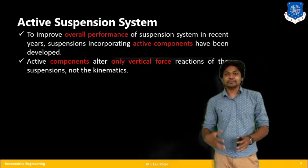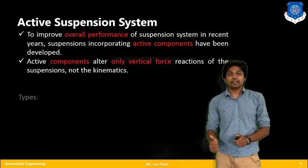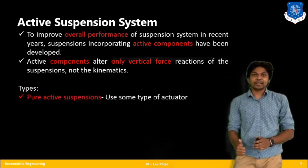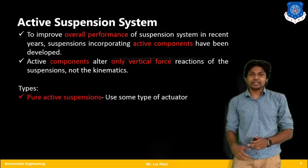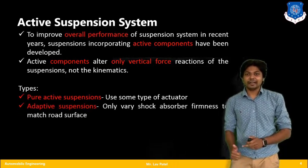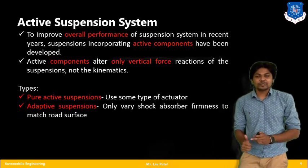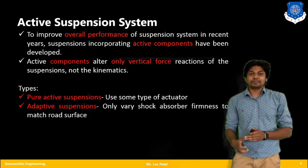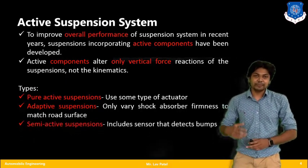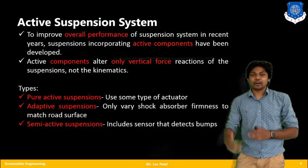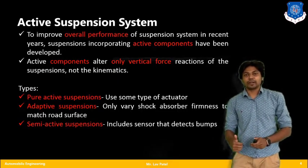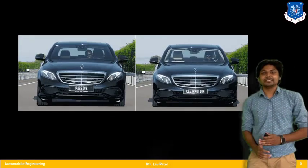In an active suspension system, several different components are incorporated, and there are several types. First is the pure active suspension system, in which several actuators can actuate the overall suspension system. Second is the adaptive suspension system, in which the stiffness or firmness can match the road surface with the help of cameras and sensors. The third is the semi-active suspension system, which can detect bumps and signal the suspension to adjust accordingly.